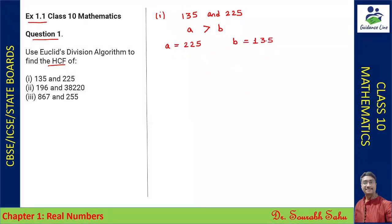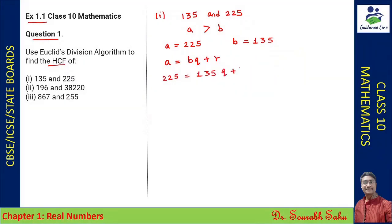According to Euclid's division algorithm, it is: a = bq + r. So here we have a = 225, which equals 135q + r.